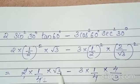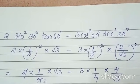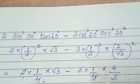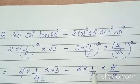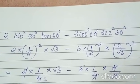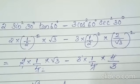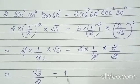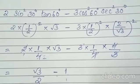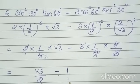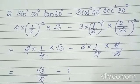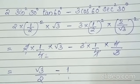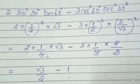Simplifying further, it will be root 3 by 2. Here the 3 and 3 cancel, and 4 and 4 cancel, leaving 1. So we have minus 1. This gives root 3 by 2 minus 1. Taking LCM of 2 and 1, the LCM is 2. So root 3 comes over 2, and 1 becomes 2 over 2. The final answer for this question is root 3 minus 2, divided by 2.